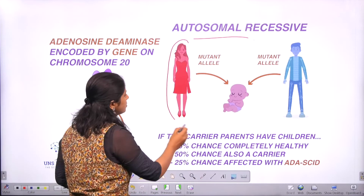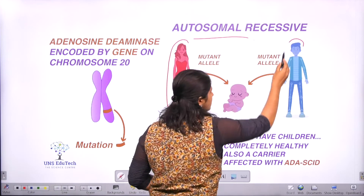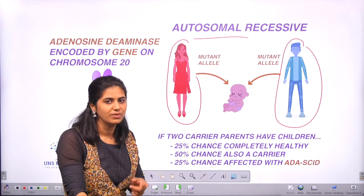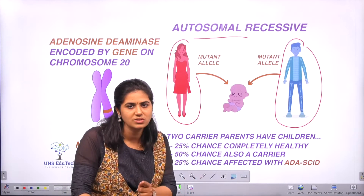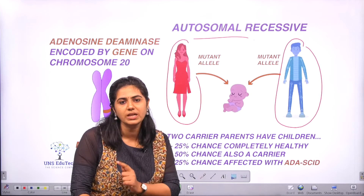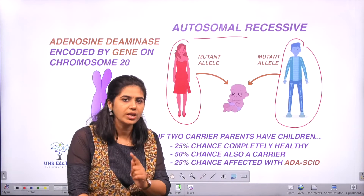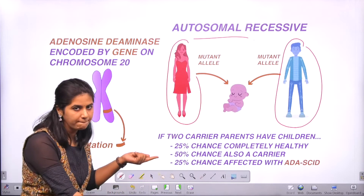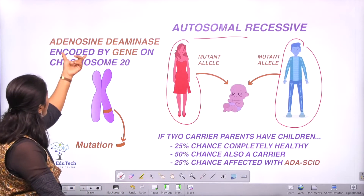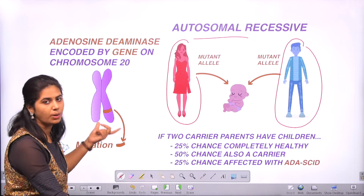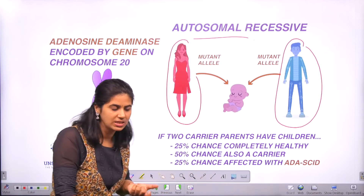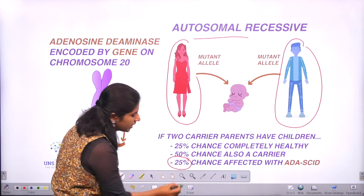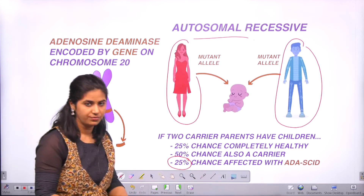If both the mother and father are carriers — similar to the sickle cell anemia question — there is a 25% chance that the child will get adenosine deaminase deficiency and show the trait.